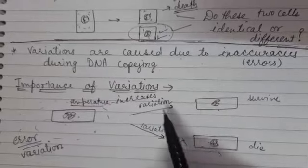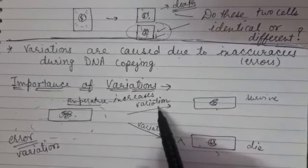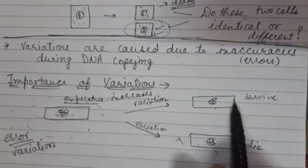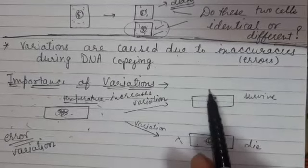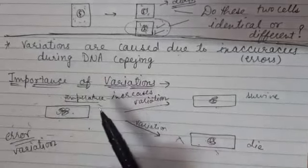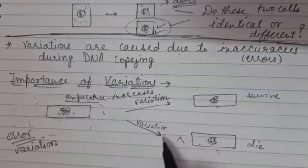However, some bacteria may develop variations, so they develop resistance to heat. These bacteria will survive. So variations become useful for the survival of the species over time.